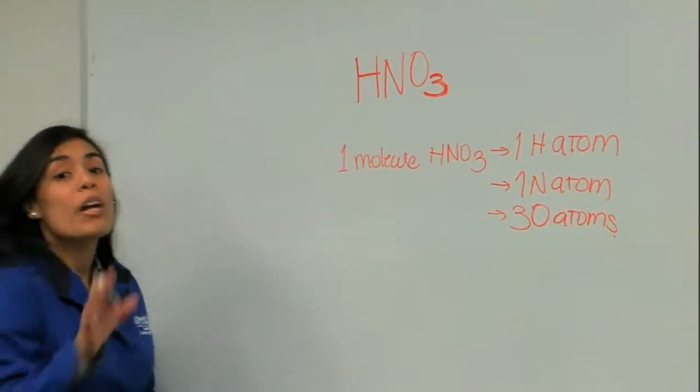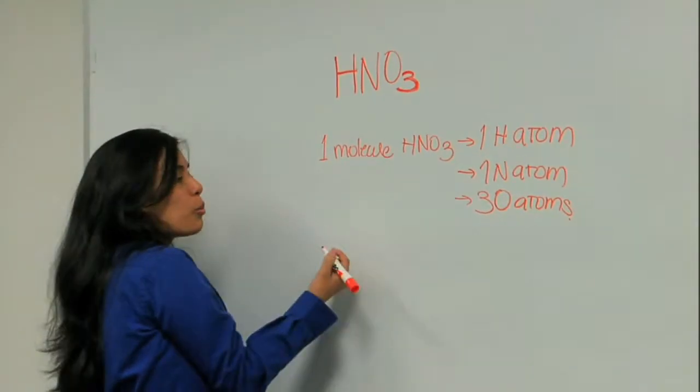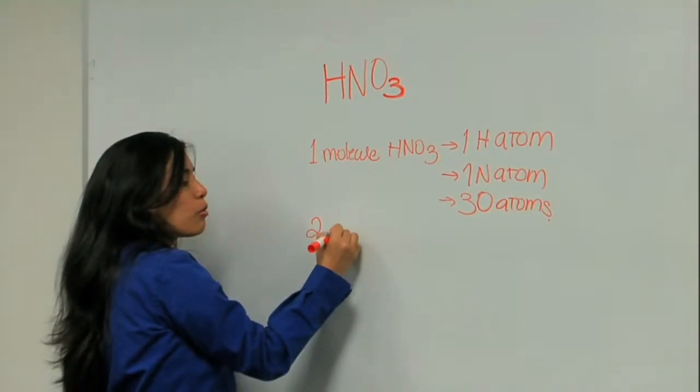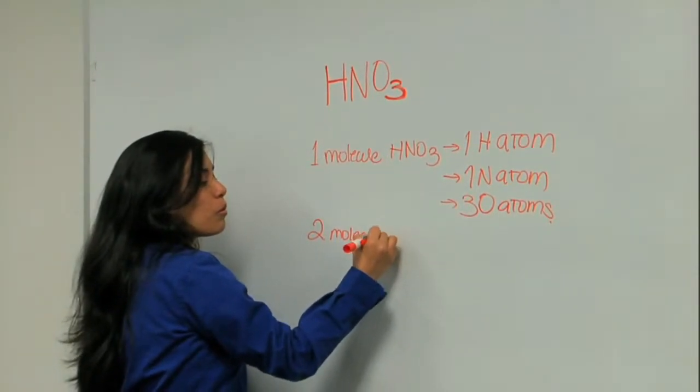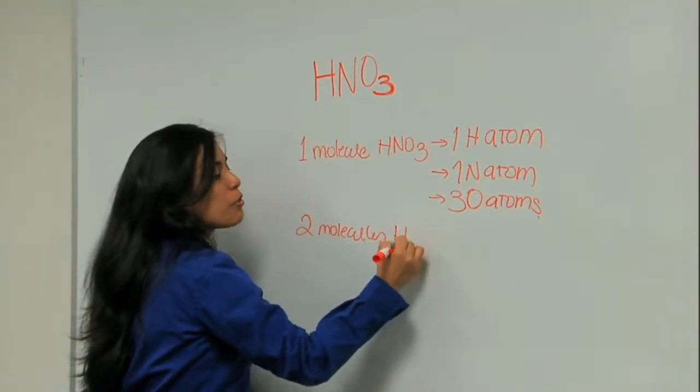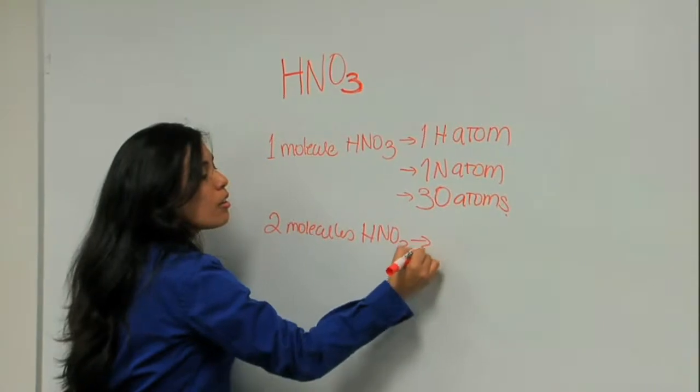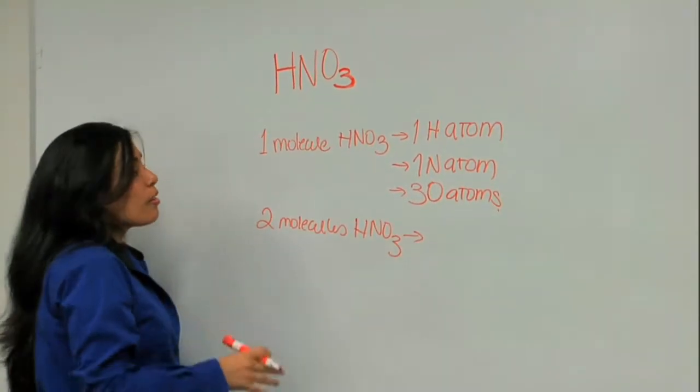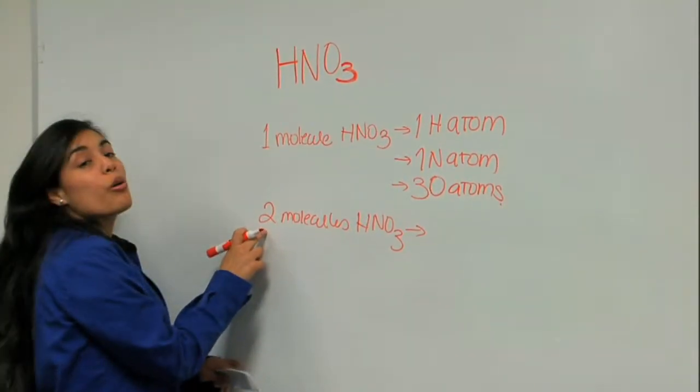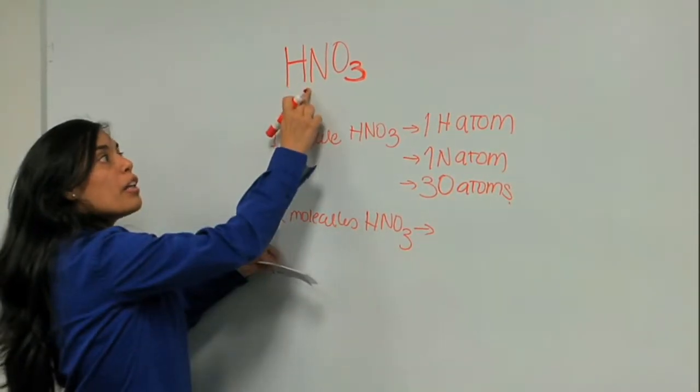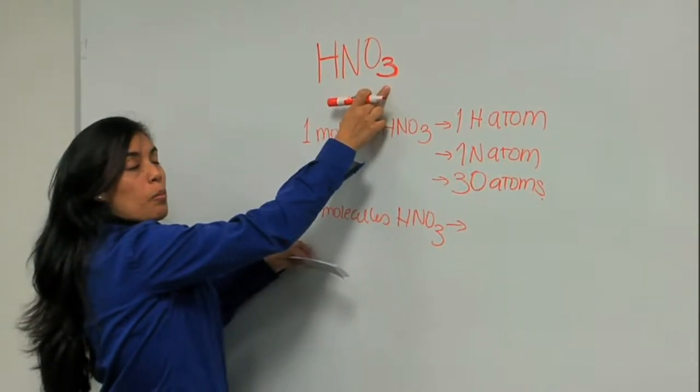Now, what happens when I don't have one molecule but maybe two molecules of nitric acid? I have to remember that this number two is going to get multiplied by each of these subscripts.